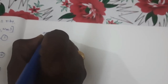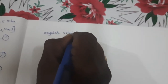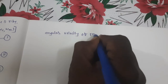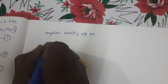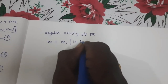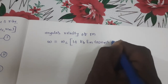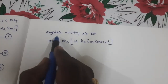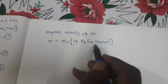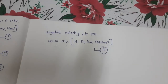Our next step is to note down the angular velocity equation for FM. The angular velocity of FM can be written as: ω = ωc · (1 + kf · em · cos(ωm · t)). This is equation number four for the angular velocity of FM.